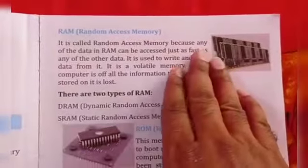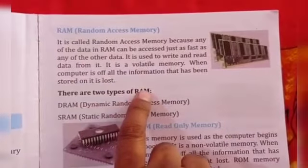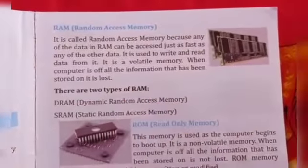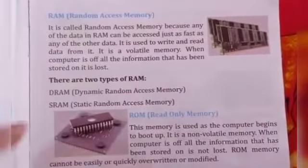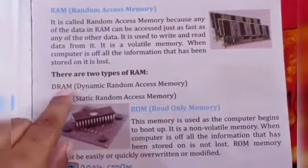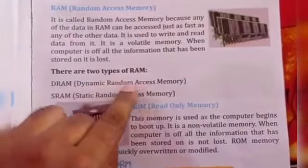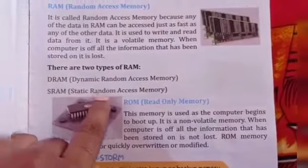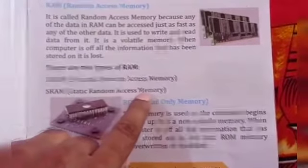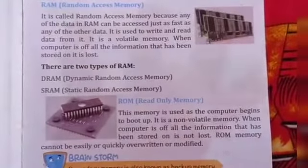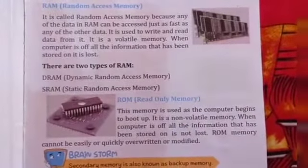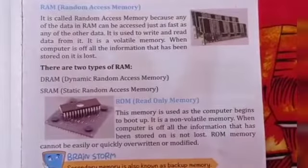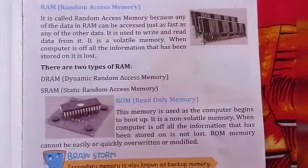There are two types of RAM: DRAM — Dynamic Random Access Memory, and SRAM — Static Random Access Memory। यानि RAM दो प्रकार की होती है: Dynamic Random Access Memory और Static Random Access Memory।